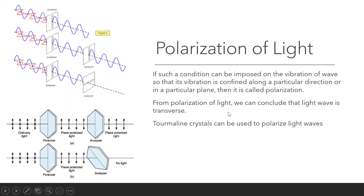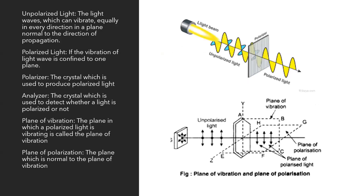From polarization of light, we can conclude that light waves are transverse. While diffraction and interference told us only that light is a kind of wave, polarization tells us what kind of wave. Let us now learn more about the polarization of light and some related terms.